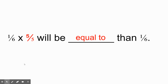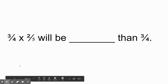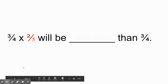Last question: three-fourths times two-fifths will be blank than two-fifths. Will it be greater than, less than, or equal to? The key number here is two-fifths — it's shown to us one time. How big is two-fifths? Is it greater than a whole, less than a whole, or equal to a whole? Two-fifths is less than a whole, which makes our answer less than two-fifths.